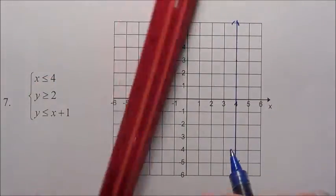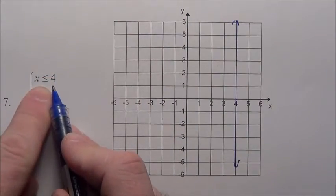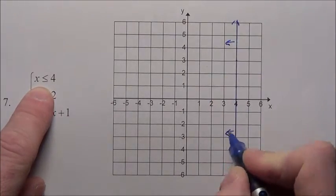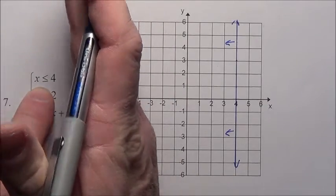Now are we going to shade to the left or the right? Well it says x is less than or equal to 4, so we are shading this direction. It's all points for this guy, everybody over here is the solution.